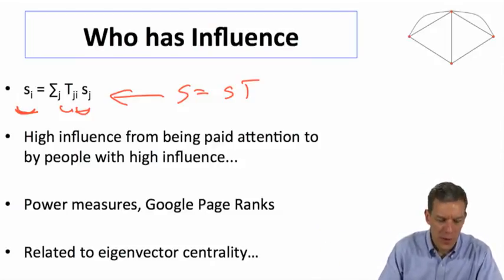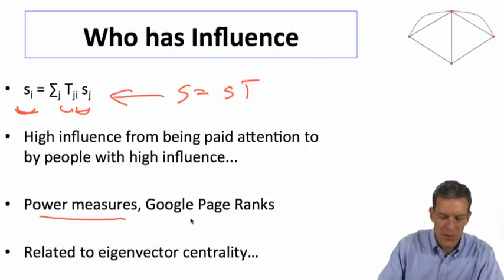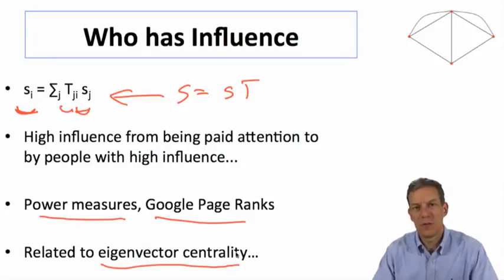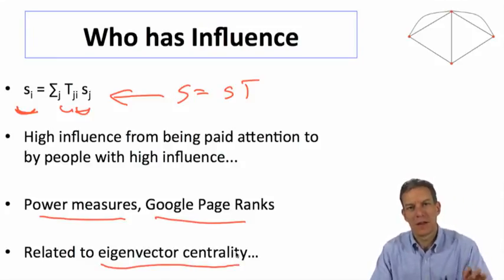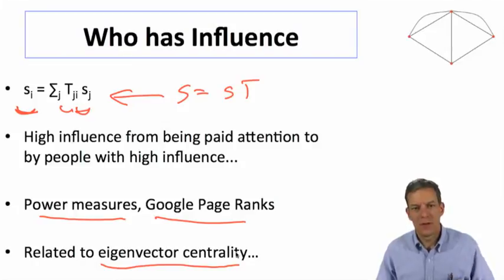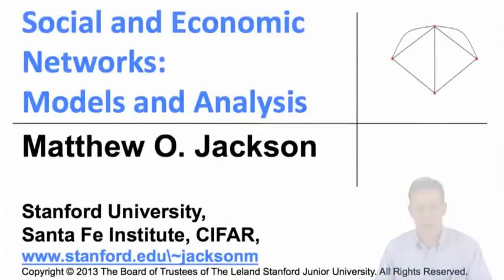So again, that relates back to things like power measures, Google PageRank, eigenvector centrality. And this is now giving us a foundation for why we would want to be looking at an eigenvector as a measure of power or influence. It comes out directly in this model, so it gives us a nice foundation for that.